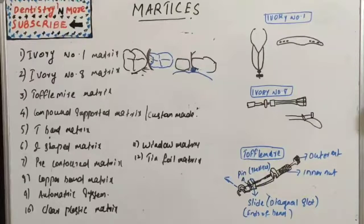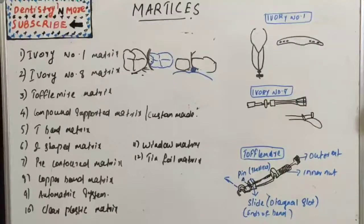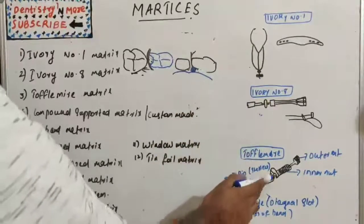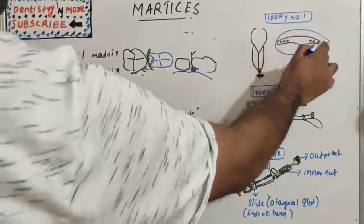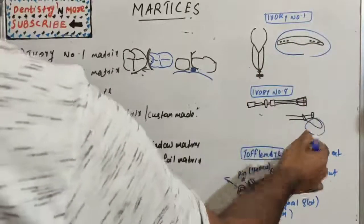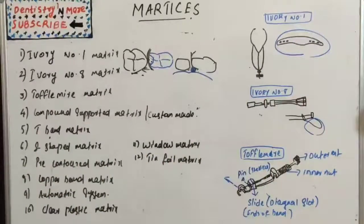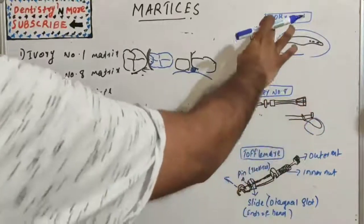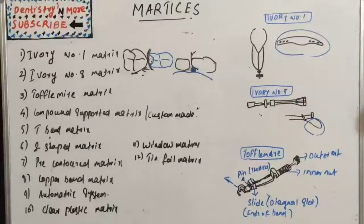Now let's learn the parts of a matrix. Any system basically has two parts: one is a retainer and the second is a band. This is a retainer, and the band is what we attach to the retainer — these are the two parts of a matrix.